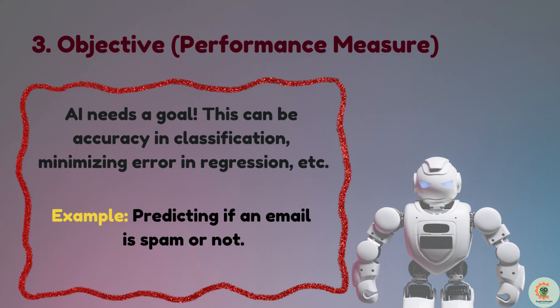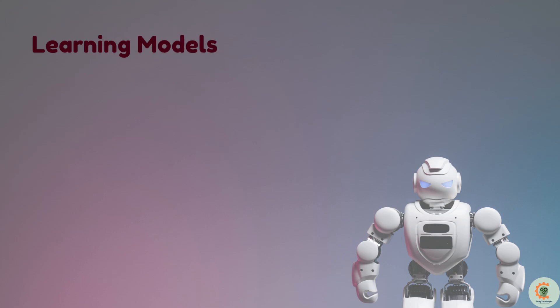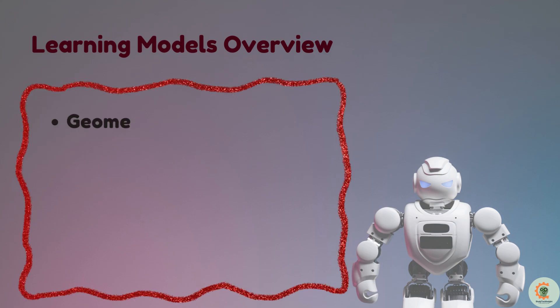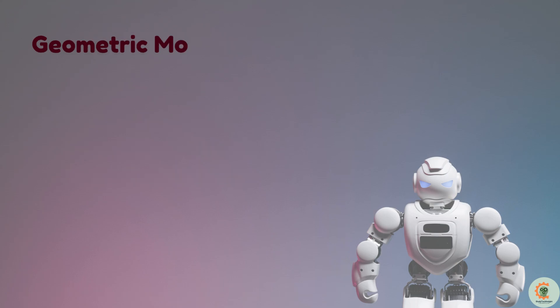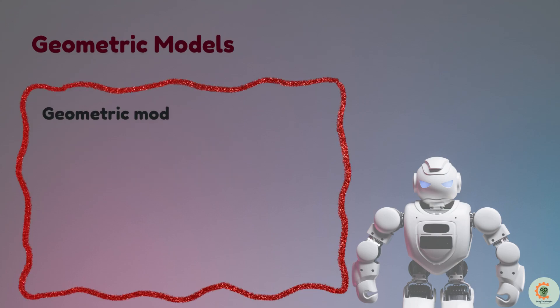Now that we understand the components, let's dive into the three main types of learning models. There are multiple ways to mathematically model learning. The three main approaches are: first, geometric models — representing data in a space; second, probabilistic models — using probability to make decisions; and finally, logic-based models — rule-based learning.